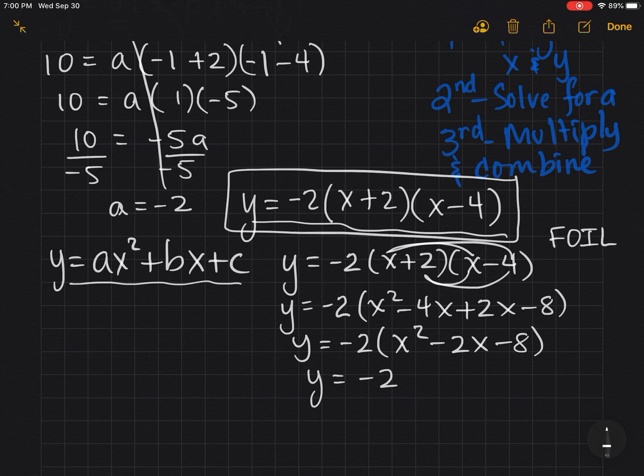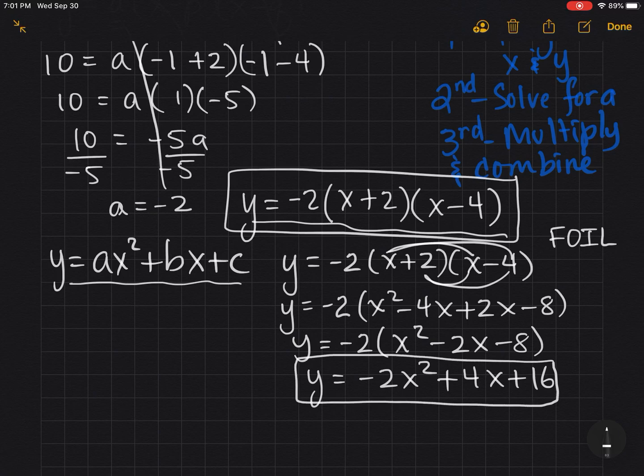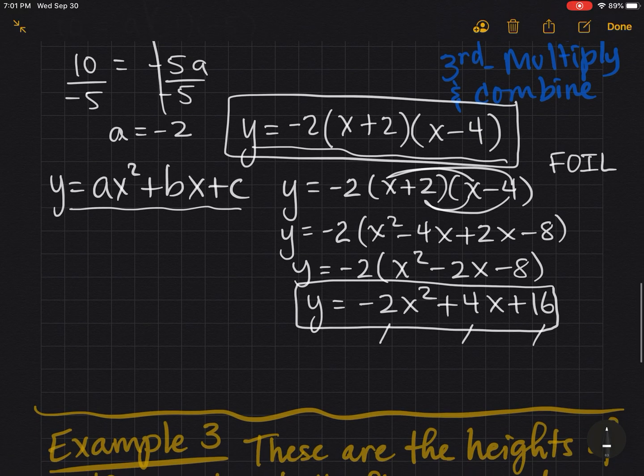I'm going to simplify inside the parentheses first, combining my like terms. Now I'll distribute the -2. So here we have standard form, and soon you'll appreciate the beauty of standard form because you can see your a, your b, and your c, and that's going to be important to us soon.